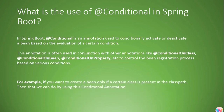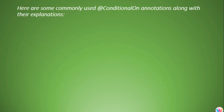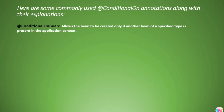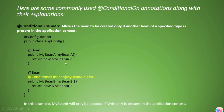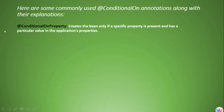For example, if we want to create a bean only if a certain class is present in the classpath, then only the bean should be created. There are many types of conditional annotations, so we will explore each one with examples. The first is @ConditionalOnBean — this allows the bean to be created only if another bean of a specified type is present in the application context. For instance, MyBeanB will only be created if MyBeanA is present in the application context.